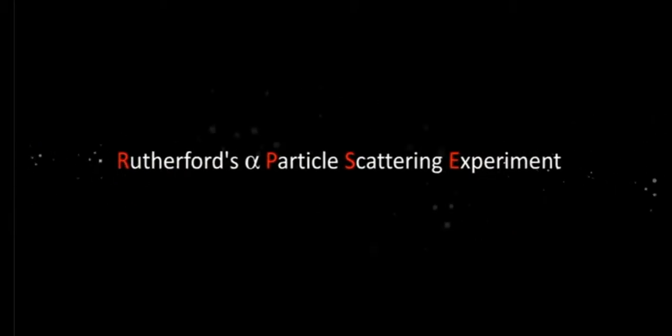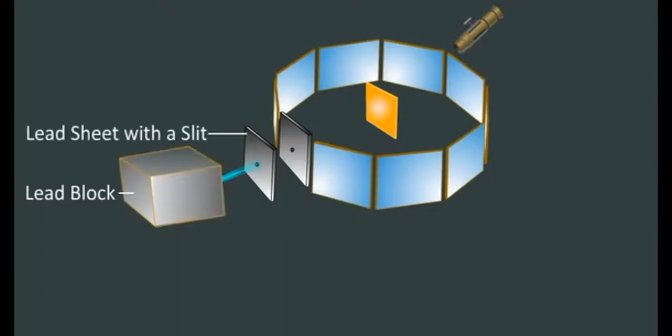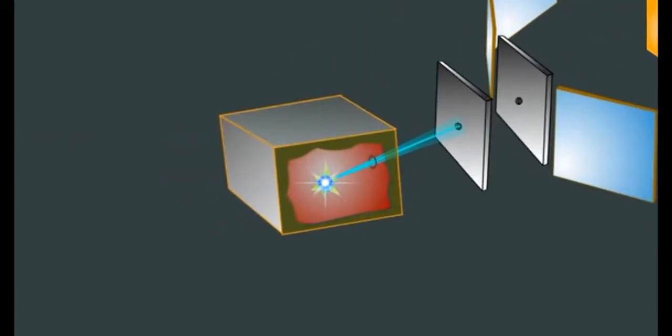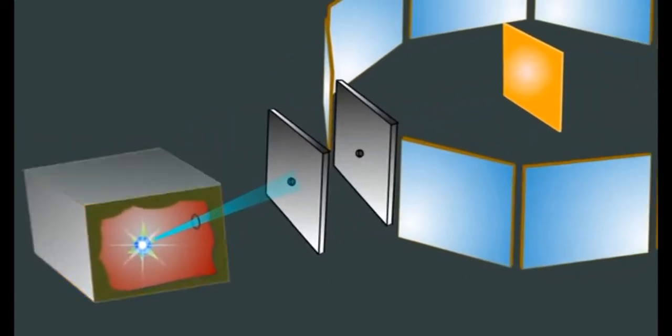Particle Scattering Experiment. Rutherford performed alpha particle scattering experiment on gold foil. Alpha particle source was kept in a lead block and a circular screen was placed around the foil.